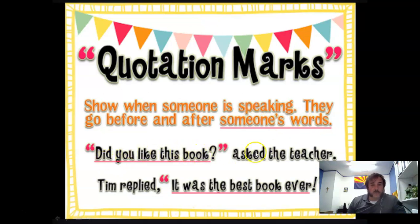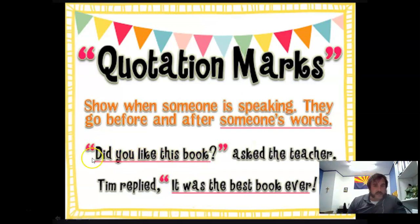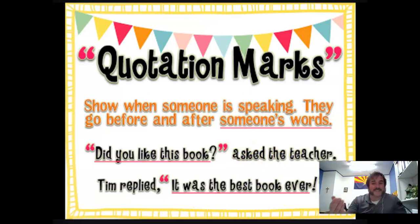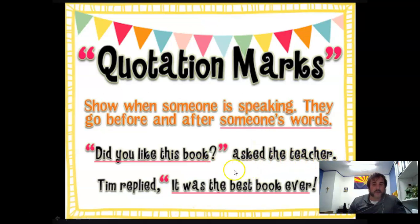'Do you like this book?' asked the teacher. Notice a couple of things. Number one, you always capitalize the first word in the quote — even, of course, if it's the first word of the sentence. Notice you have a question mark to end it, and then you start the attribution with a lowercase letter because you're still continuing that sentence. 'Do you like this book?' asked the teacher — that's the full sentence, which is why the period is at the end. 'Do you like this book?' is the question the teacher asked, so that's why you end that quote with the question mark.